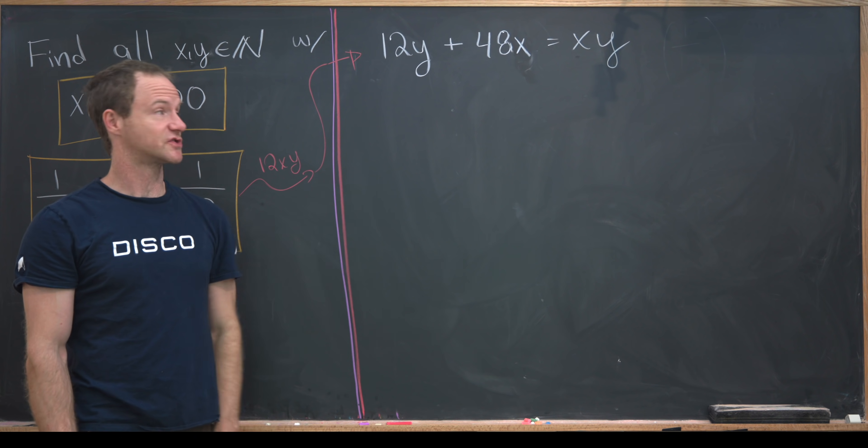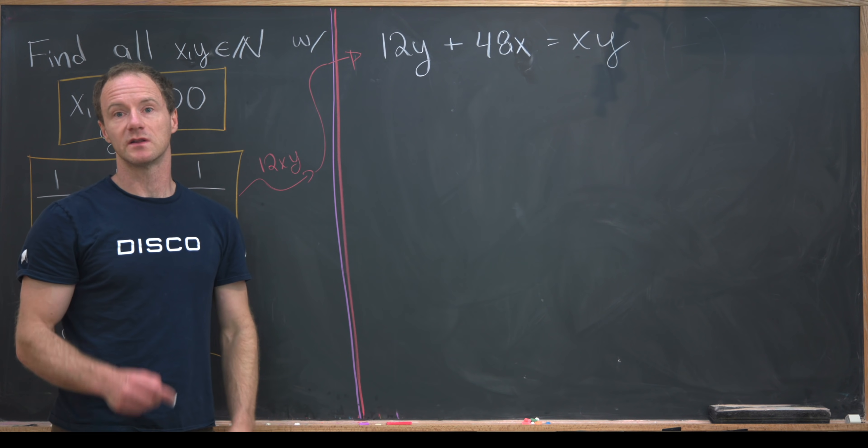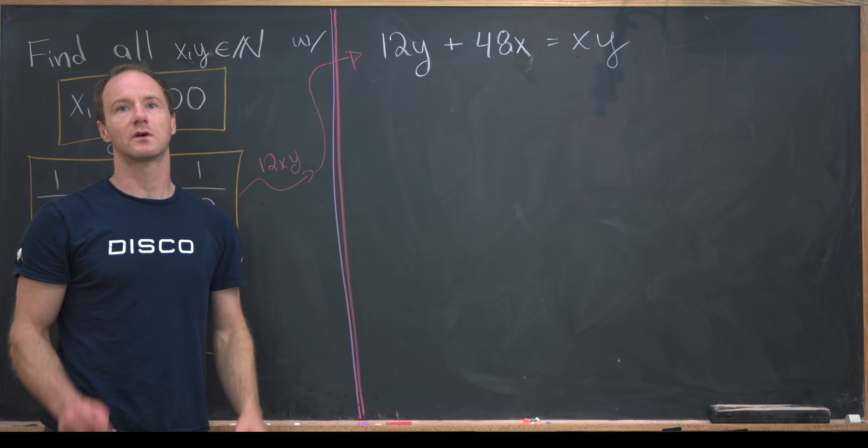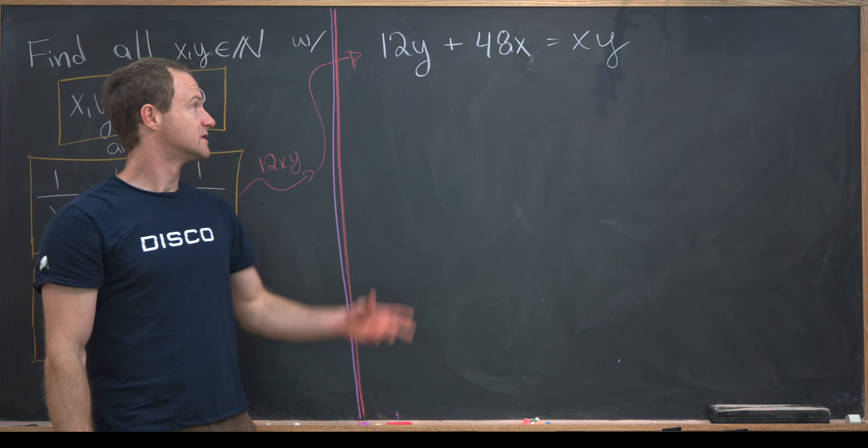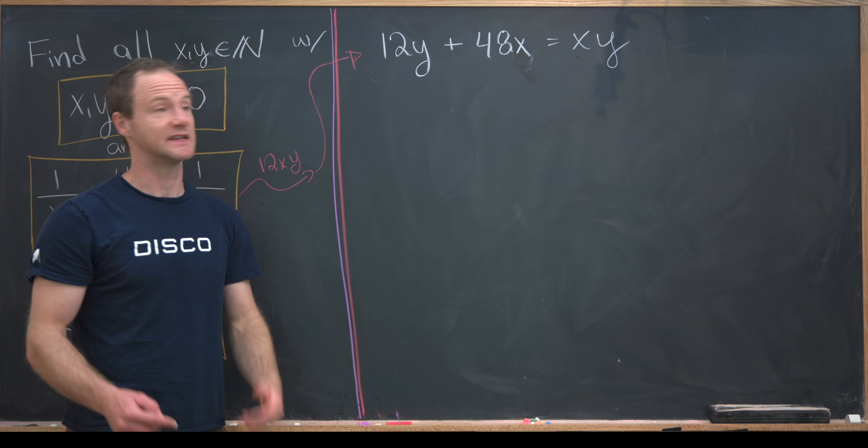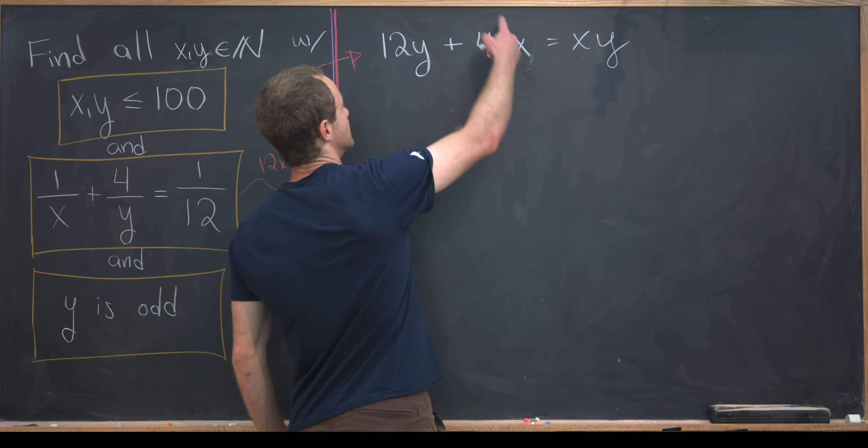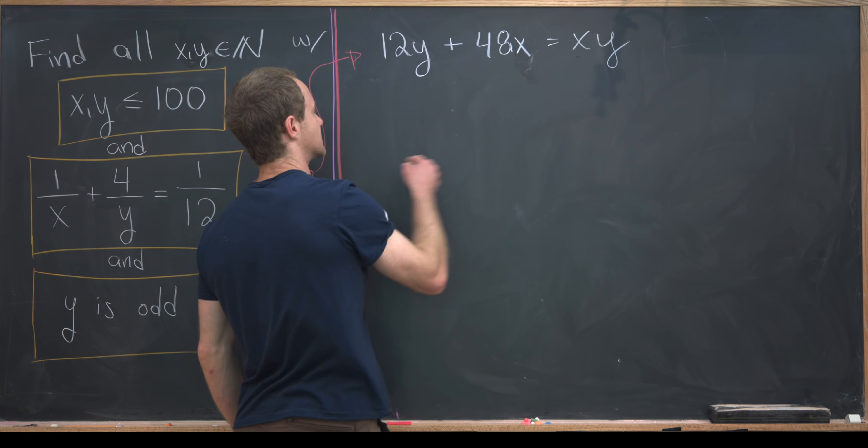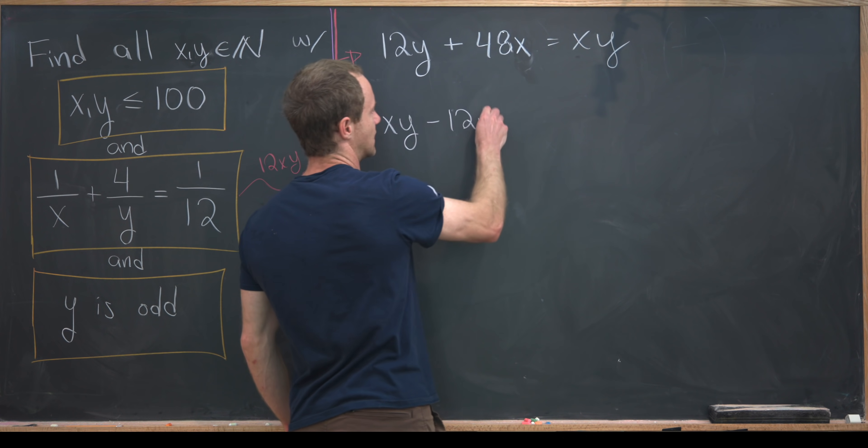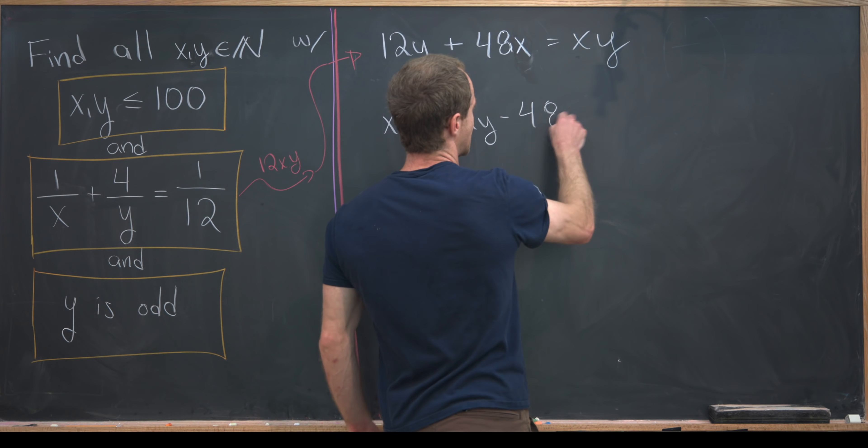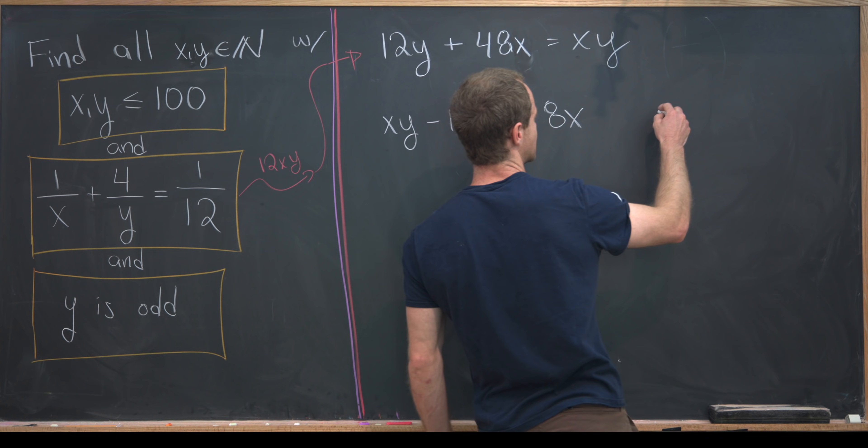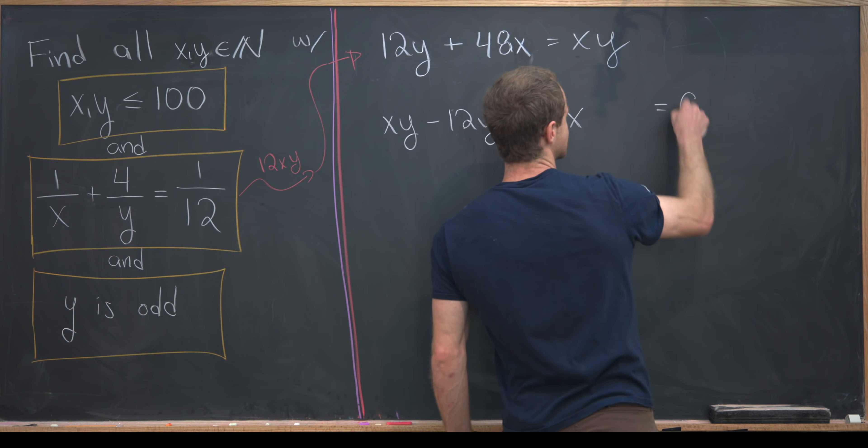That's exactly the strategy we'll take here. Instead of completing the square, we will complete the product. Let's move everything to one side of the equation and then get started with that. I'll move these two things from the left-hand side to the right-hand side. That leaves me with x times y minus 12y minus 48x, I'm going to leave a little bit of a gap, equals 0.